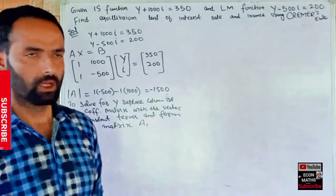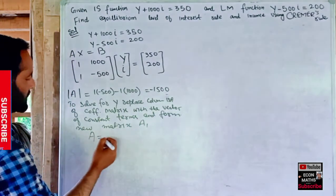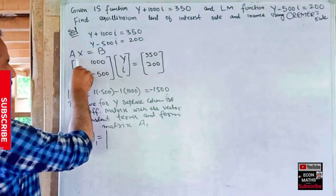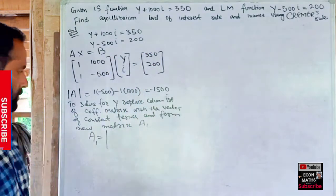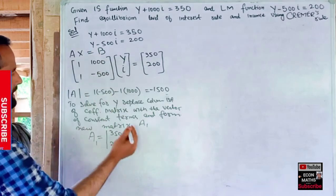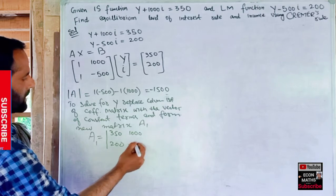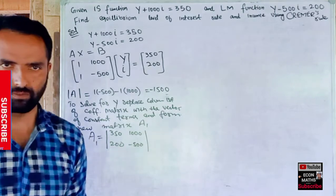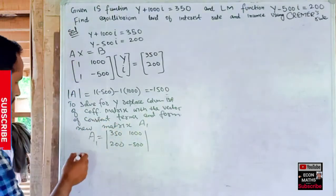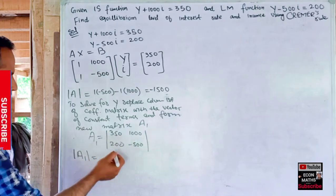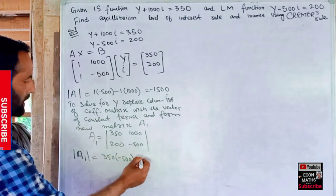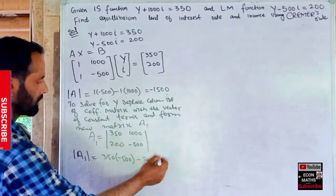Let's call this new matrix A1. A1 is formed by replacing the first column with the constant terms vector: the first column becomes 350 and 200, while the second column remains 1000 and −500. We then take the determinant of A1: that is 350×(−500) − 200×1000 = −175,000 − 200,000 = −375,000.